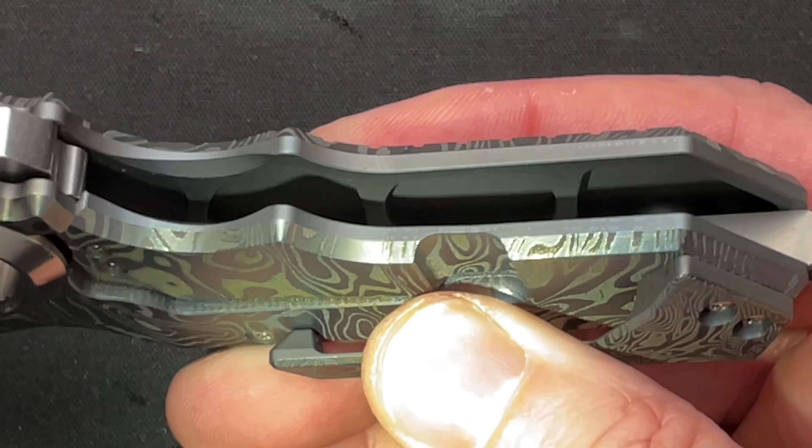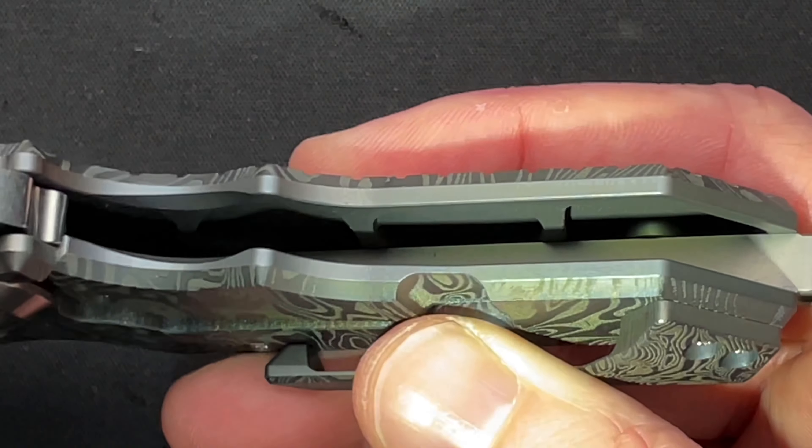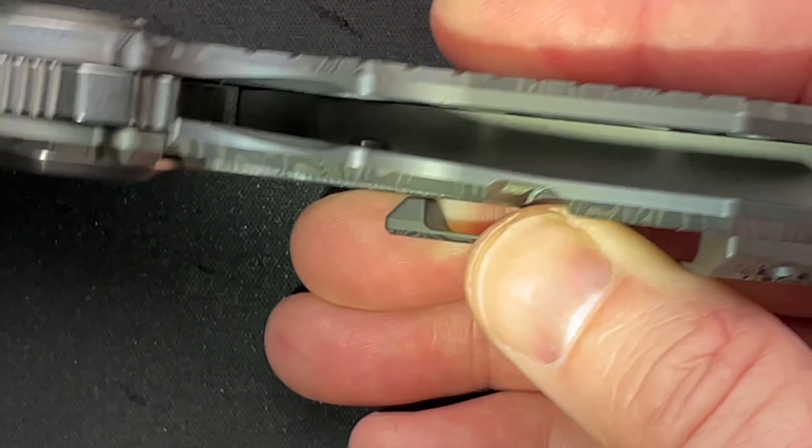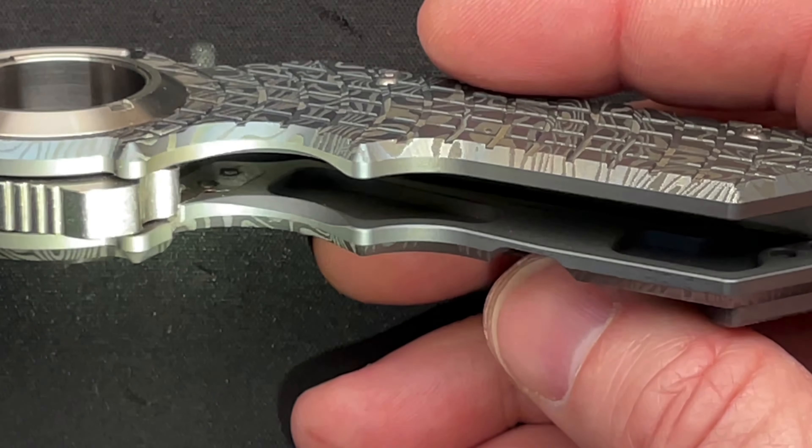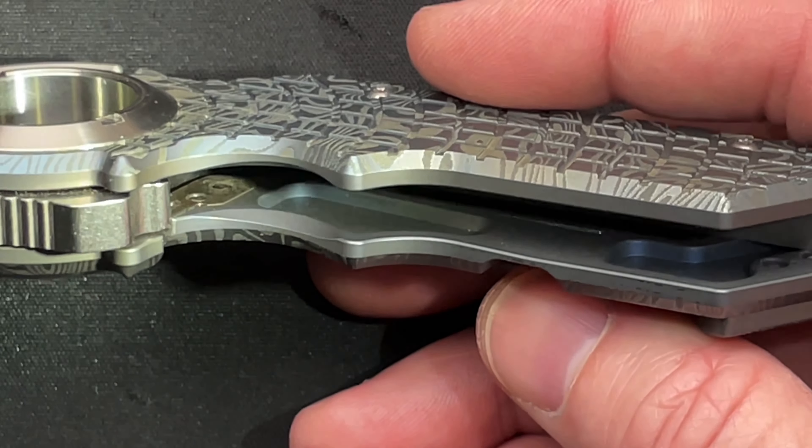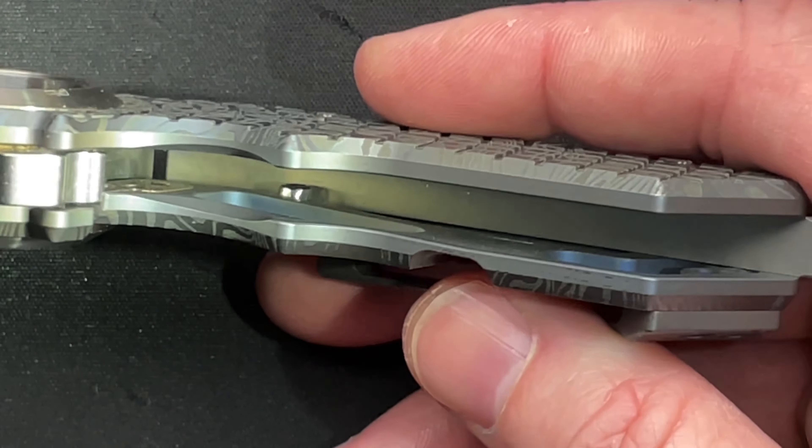And thank God they did because it's already almost eight ounces. If they didn't mill that out, it would be way more. You can see the steel lock bar insert in there and the milling.